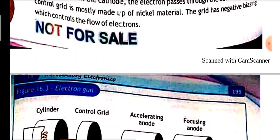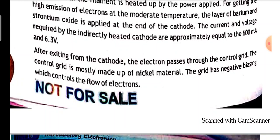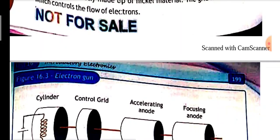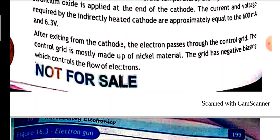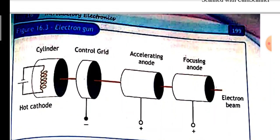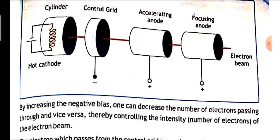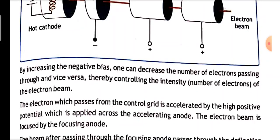After exiting from the cathode, the electrons pass through the control grid. The control grid is mostly made up of nickel material. The grid has negative biasing which controls the flow of electrons. By increasing the negative bias, one can decrease the number of electrons passing through and vice versa. This controls the intensity or number of electrons in the electron beam.